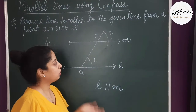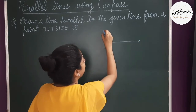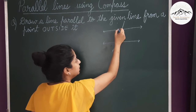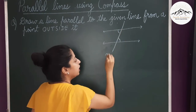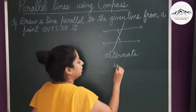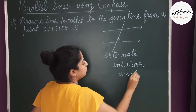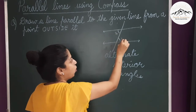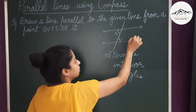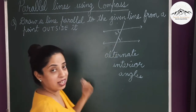Now we will use another fact to draw parallel lines. You know that if two lines are parallel and there is a transversal, then this angle and this angle — which angles are these? These are alternate interior angles. So if alternate interior angles are equal, the two lines are parallel. We will use this fact in drawing our next diagram.